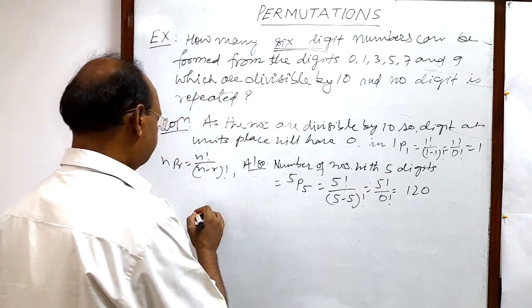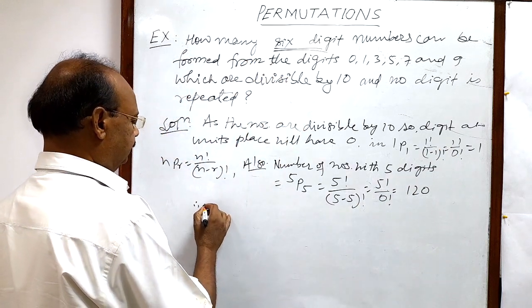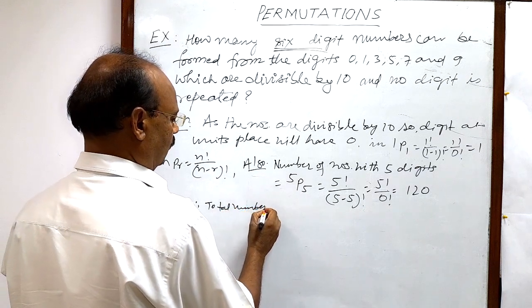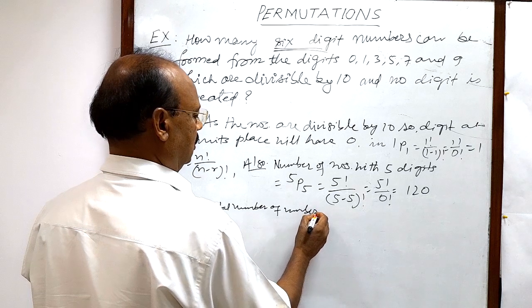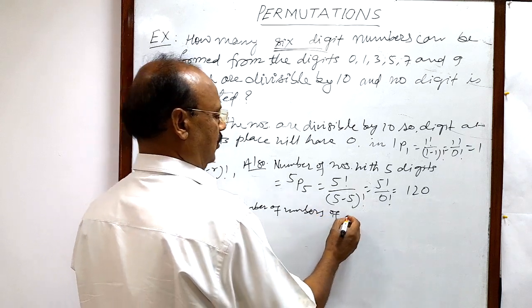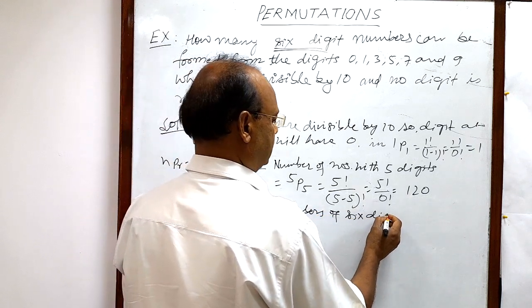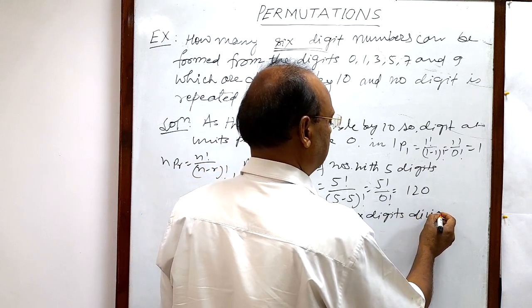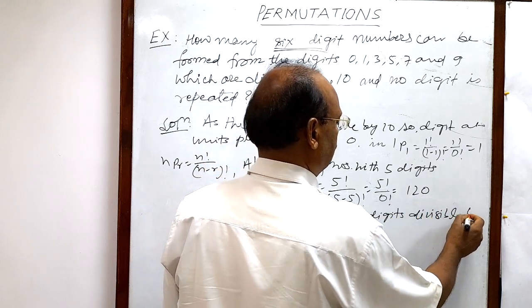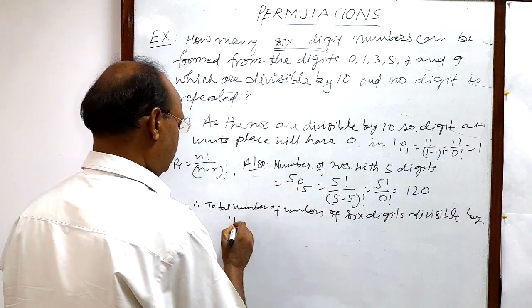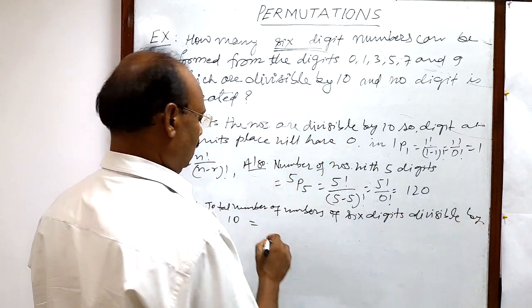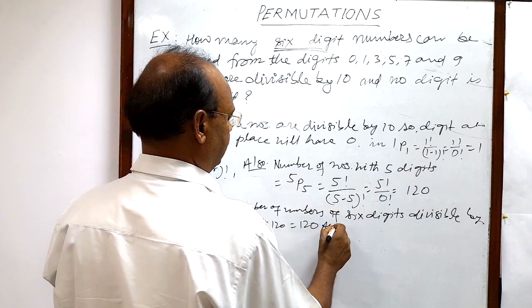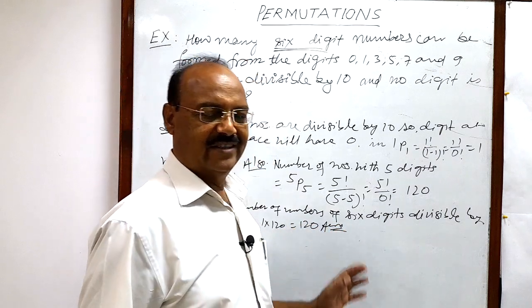Therefore, the total number of numbers of 6 digits divisible by 10 is equal to 1 into 120. This is the answer.